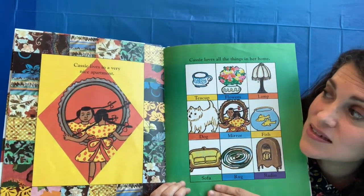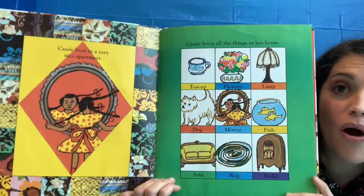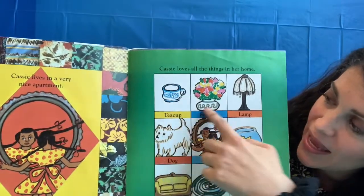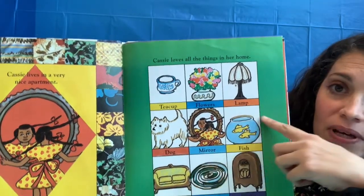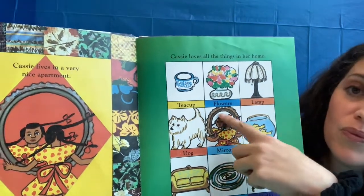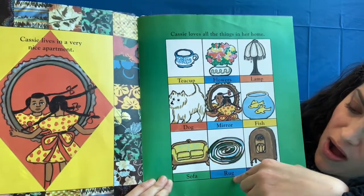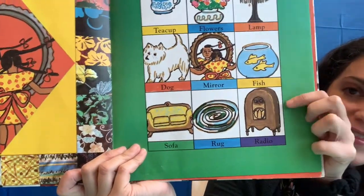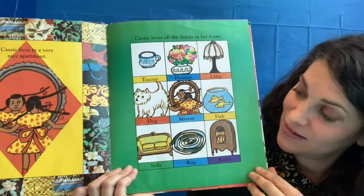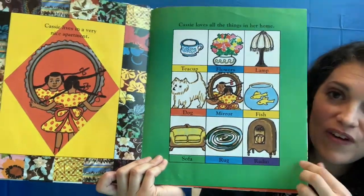Cassie lives in a very nice apartment and loves all the things in her home. What kinds of things are in her home? Let's look at her word quilt. There's a teacup, flowers, a lamp, fish — she's got some pet fish — a mirror, a doggy, a sofa, a rug, and a radio. That radio looks pretty different from the radios we have today — it's an old-fashioned radio.